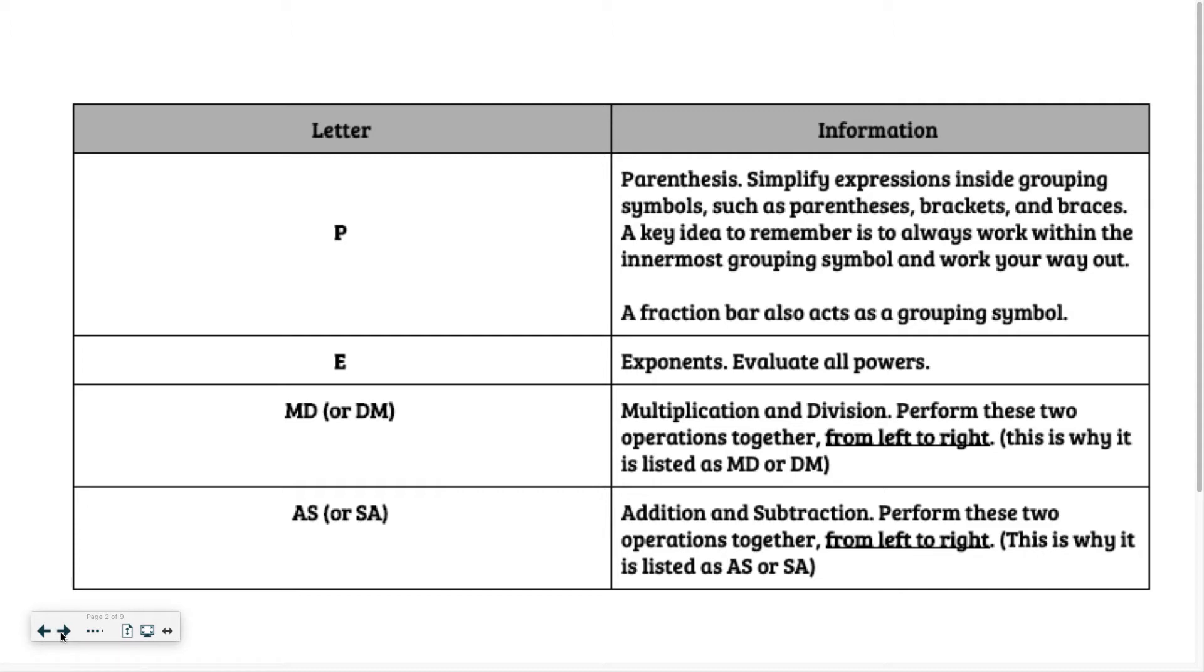P stands for parentheses. These parentheses can be the ones you're used to, square brackets, or curly brackets, although curly brackets usually get used for other things. These are all types of parentheses, and you always start by simplifying anything inside parentheses.